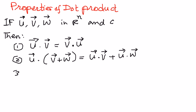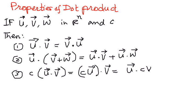Then, the third property is, if we have a constant and if that is multiplied to vector u dot vector v, we can write this one as c times vector u dot vector v, or we can also write this one as vector u dot c times vector v. Any one of those is true.